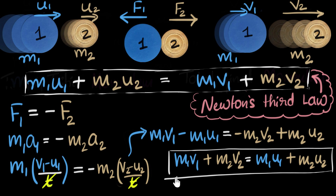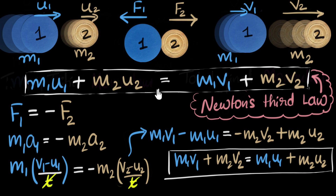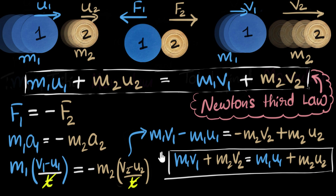To quickly summarize how we did this derivation: first, we wrote what we wanted in mathematical form. Then we asked what concept to apply — the most important step — and that was Newton's third law. Once we understood that, we started with Newton's third law in mathematical form, kept substituting using Newton's second law and the definition of acceleration, did some algebra, and derived the conservation of momentum.